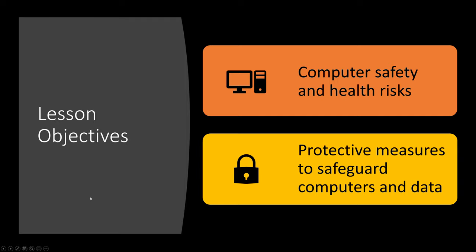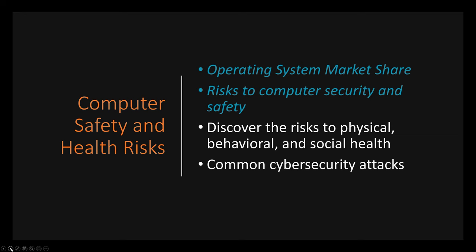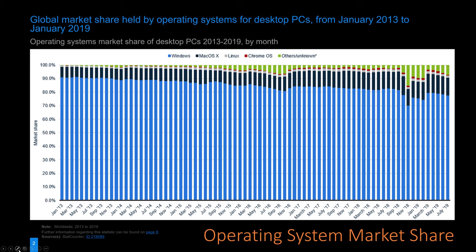Let's look at what we'll cover in this module. There are two main sections: computer safety and health risks, and protective measures to safeguard computers and data — broken into four parts. We'll cover Part 1a now: operating system market share and risks to computer security and safety. I want to make you truly understand the risks through some frank, eye-opening discussion.